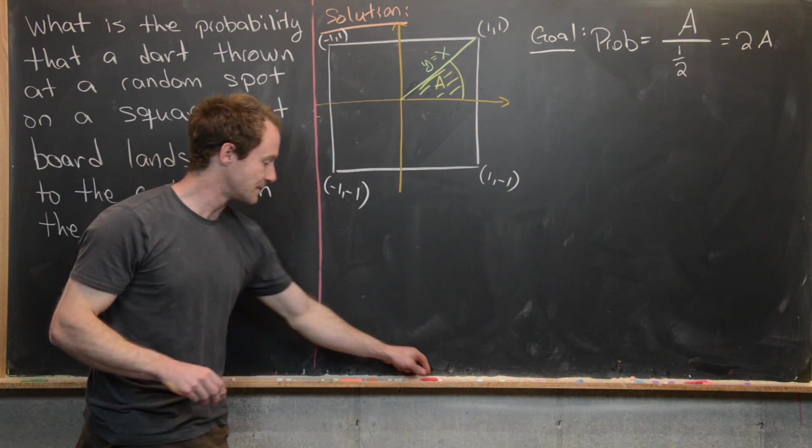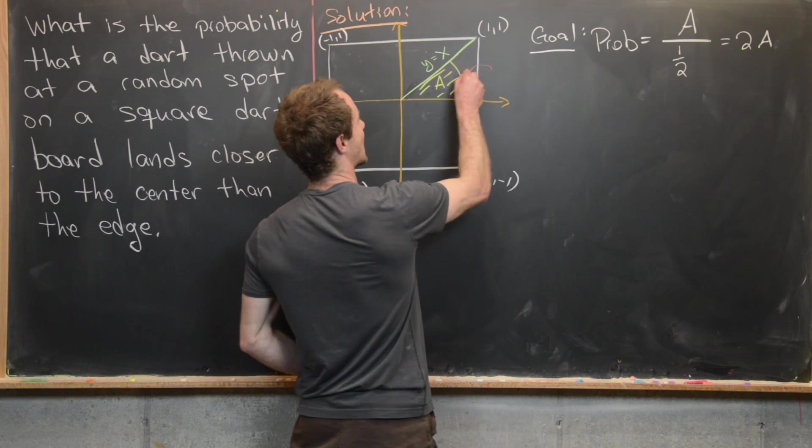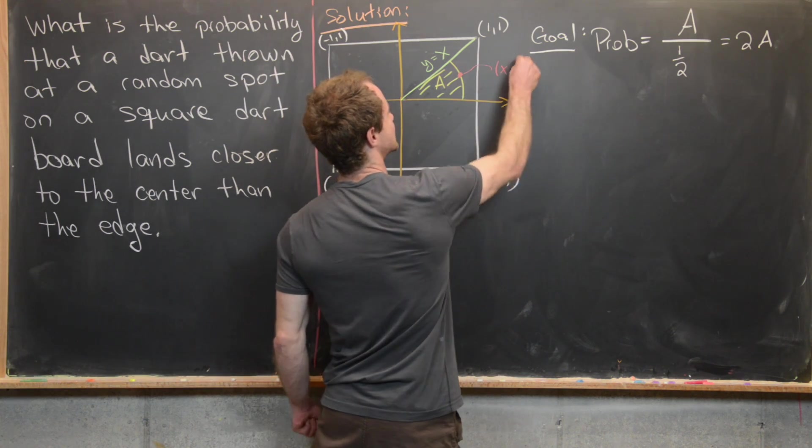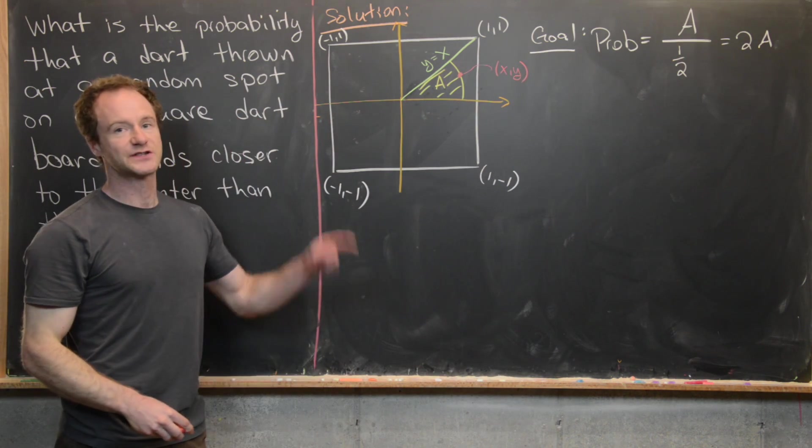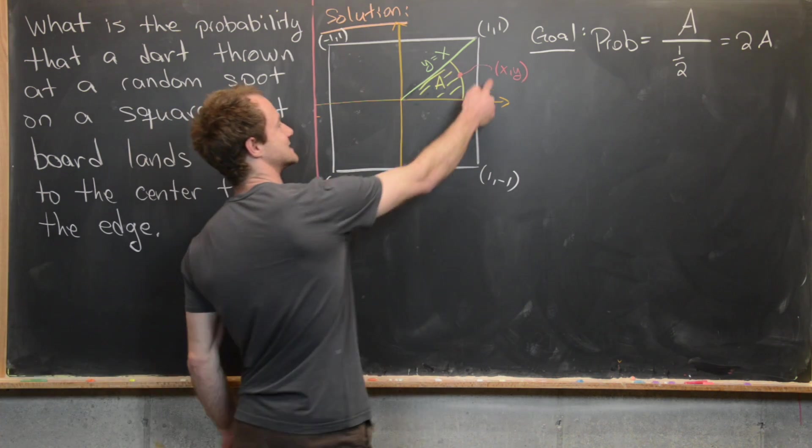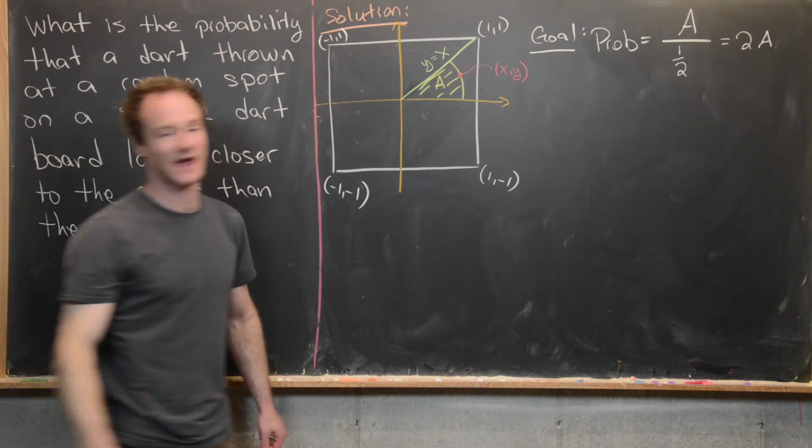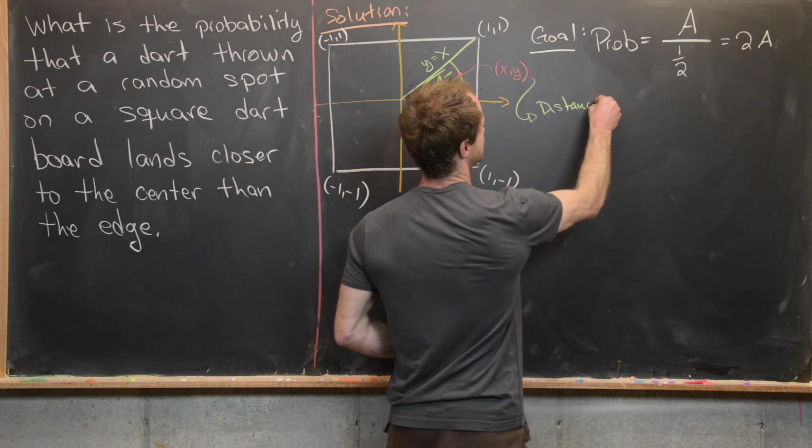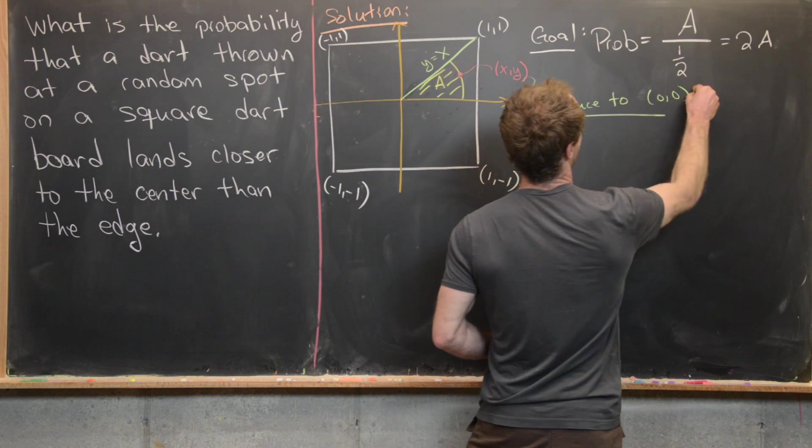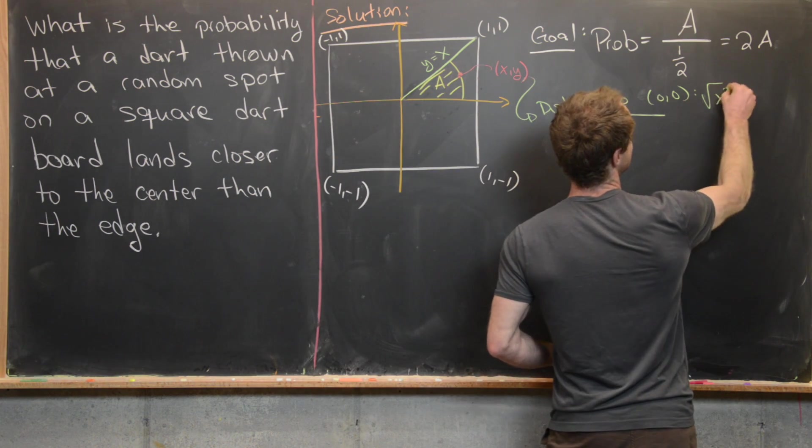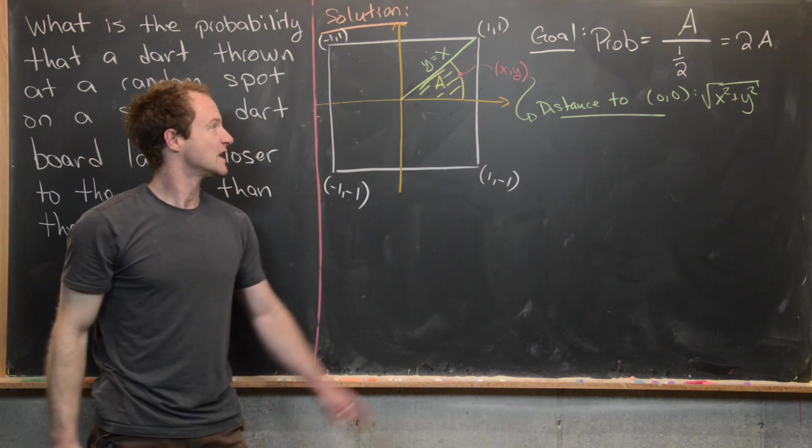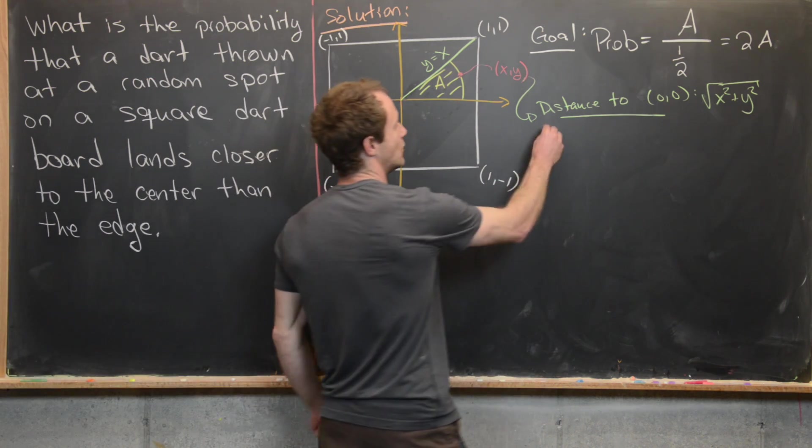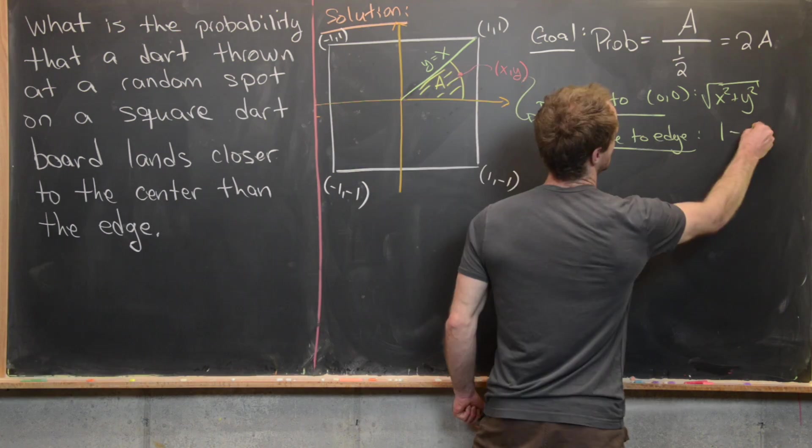So now we just have to calculate this area and we'll do that first by calculating what this curve is. So let's say that this point (x,y) is a point on the curve. And so that means it satisfies the rule that it has the same distance to the origin as it does to the edge. So let's go ahead and write down those two distances. So the distance to the origin of this point, just using the distance formula, that's going to be the square root of x squared plus y squared. And then the distance to the edge, since the x coordinate is larger than the y coordinate, we know that that's just 1 minus x.